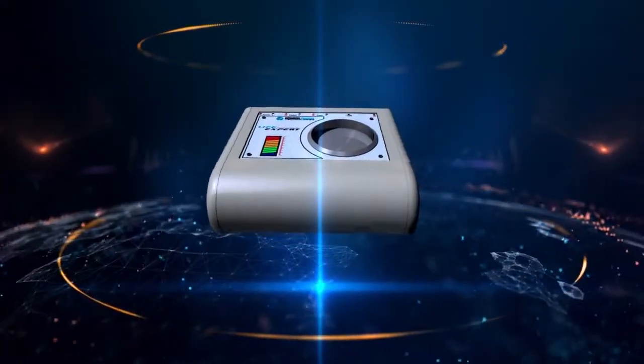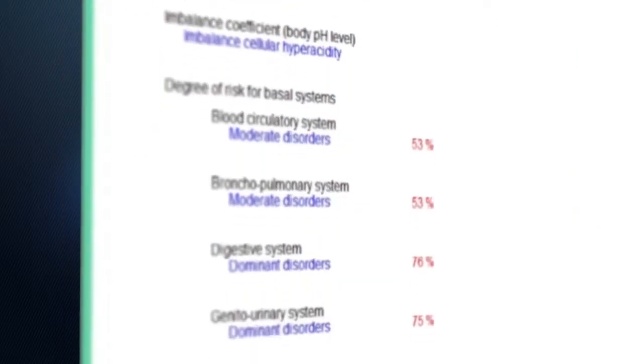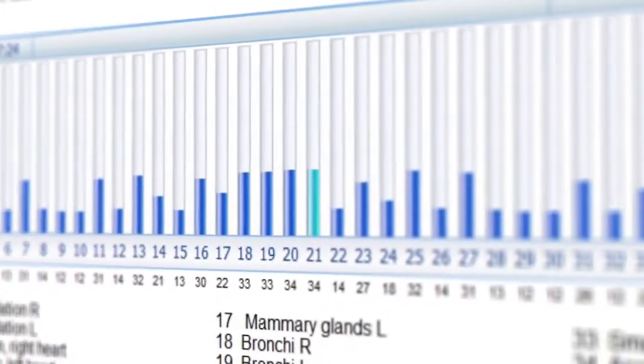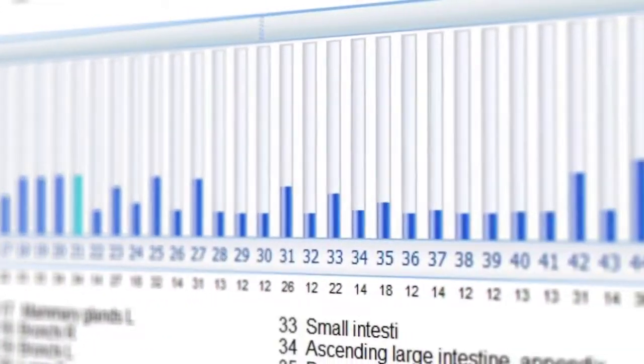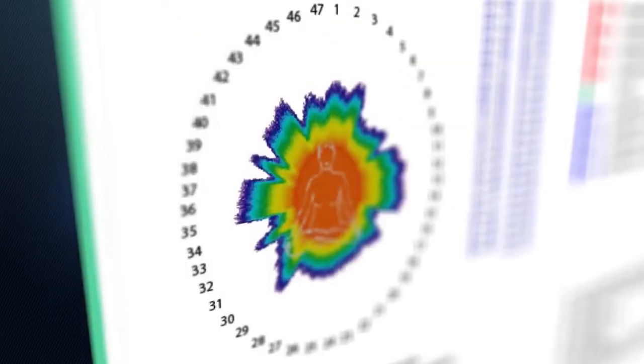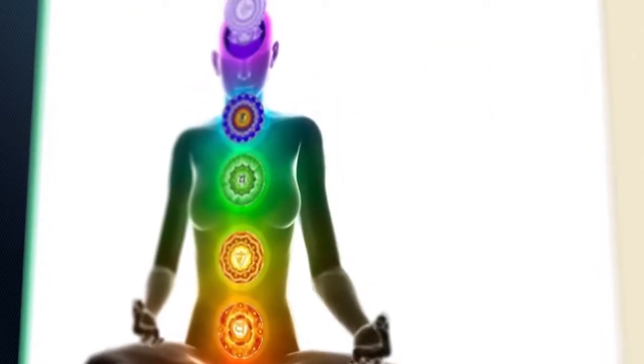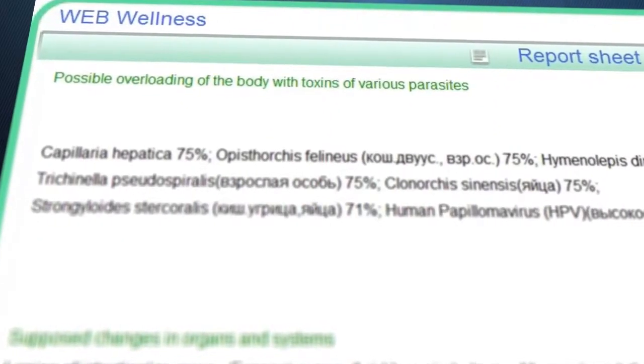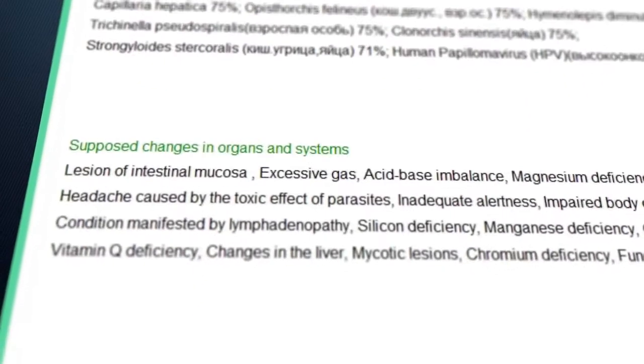Chart of the supposed condition of 47 organs and systems, spineogram, chakras, likely toxic load caused by various parasites, and suggested changes in organs and systems, plus physiological age.